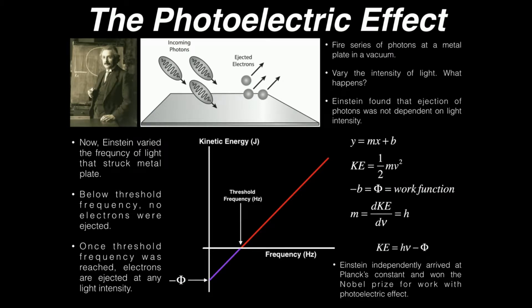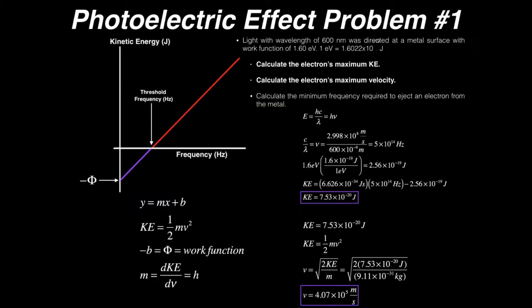Now that we've discussed the theory behind Einstein's photoelectric effect, let's actually do a practice problem with it. Light with a wavelength of 600 nanometers was directed at a metal surface with a work function of 1.6 electron volts, and we need to remember that 1 electron volt is 1.6 times 10 to the minus 19th joules.